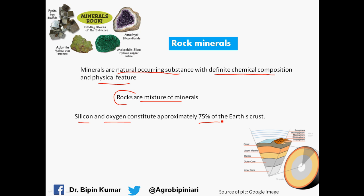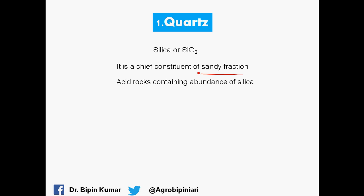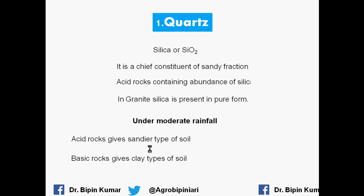The first and most important rock mineral is quartz. Quartz has the composition of silicon dioxide (SiO2) and is the chief constituent of the sandy fraction of soil. It is mainly abundant in acid rocks, and granite is one of the best examples where you will find the pure form of silica. Under moderate rainfall, acid rocks give a sandy type of soil while basic rocks give a clay type of soil.